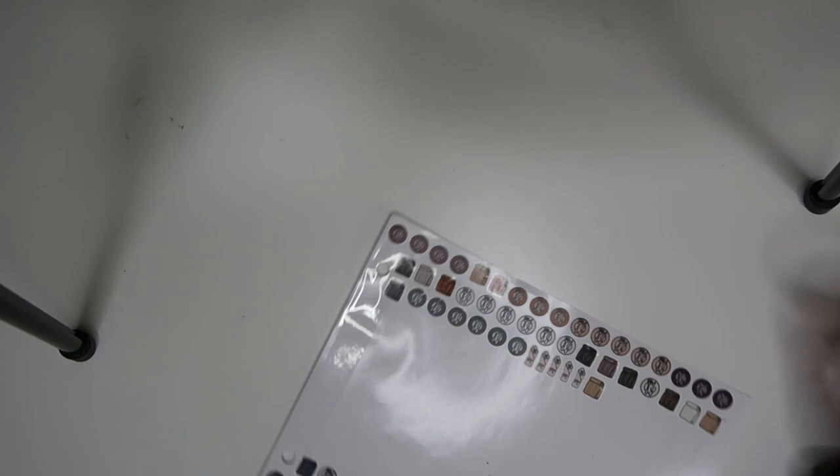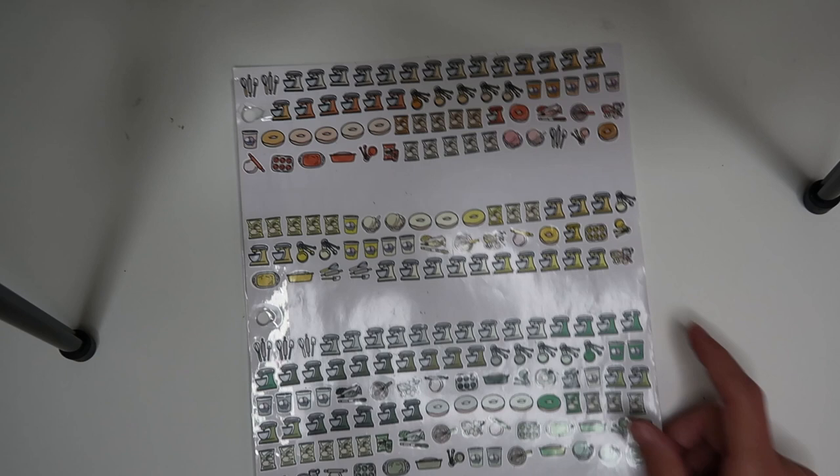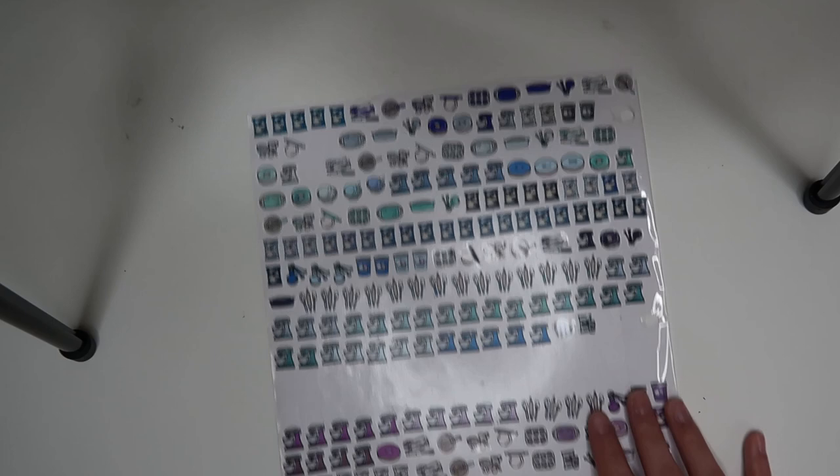And then we go into baking slash sweets. Baking sweets and snacks is basically what this is. So we've got red and pink. We've got ice cream, donuts, mixers, that type of stuff. Some chips, orange, yellow, green, ice cream, blue, and purple. And then we have browns and blacks.